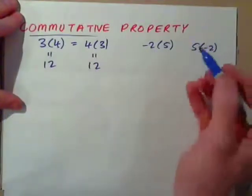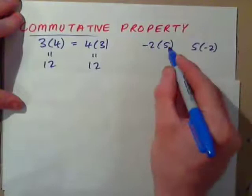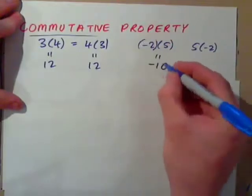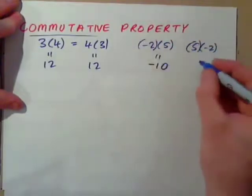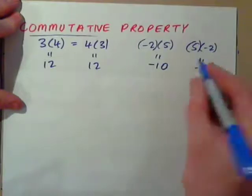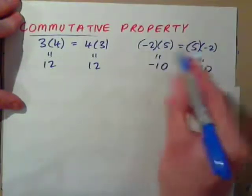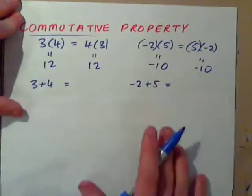It doesn't matter if the numbers are positive or negative. Negative 2 times positive 5 is negative 10. Positive 5 times negative 2 is also negative 10. So, we can swap the numbers around with multiplication, and that's the commutative property.